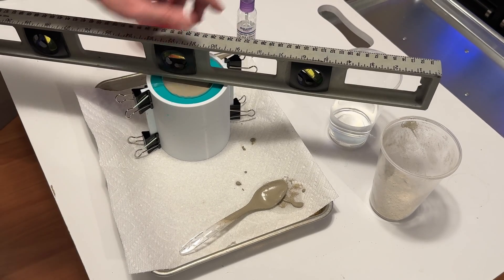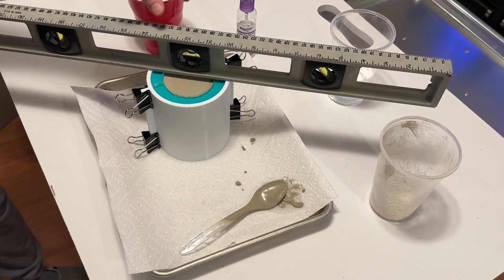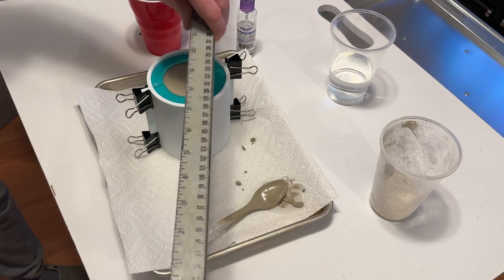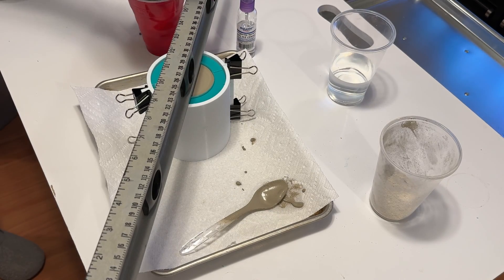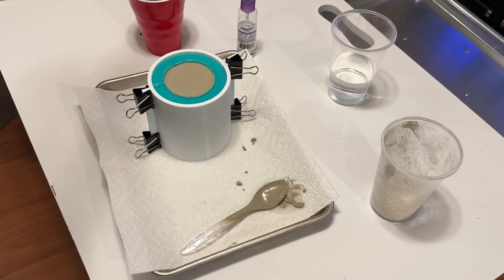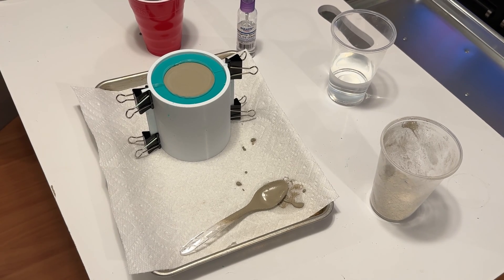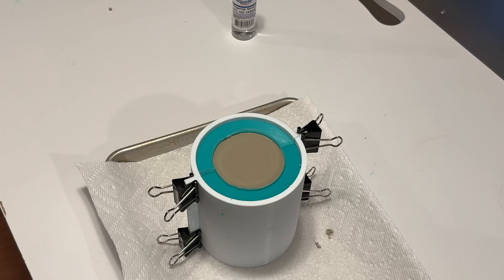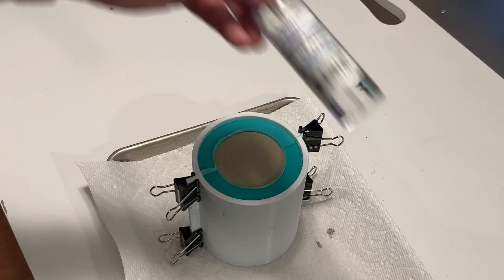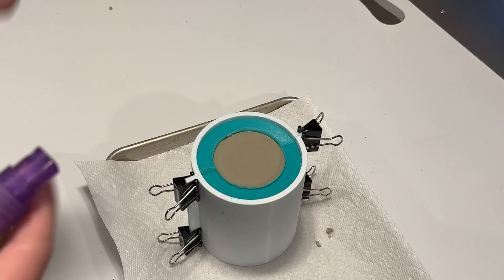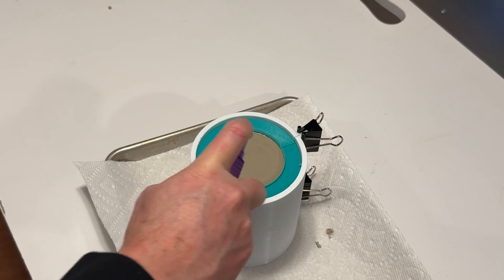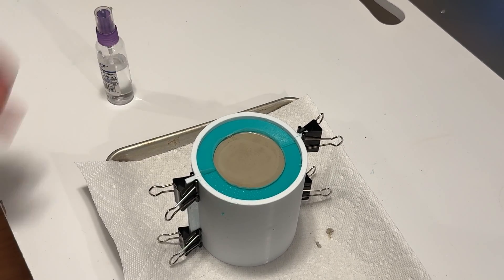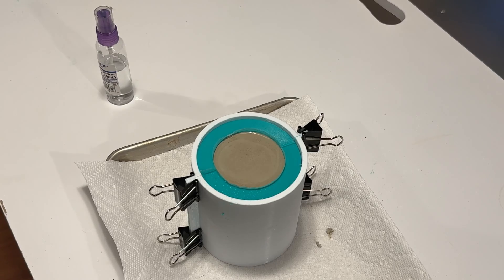And then the last thing I do is use a level to make sure it is as level as possible on whatever tray or desk you're using, just to make sure the base of the vessel is flat. And then I spray it with a little bit of water every 15 minutes. I've heard this helps to reduce cracking.